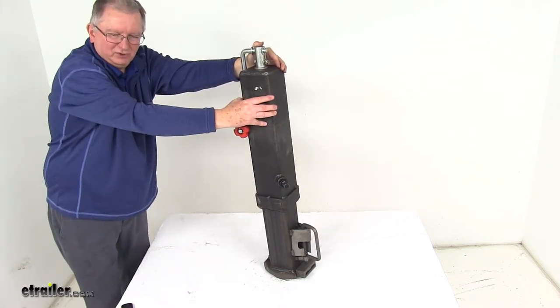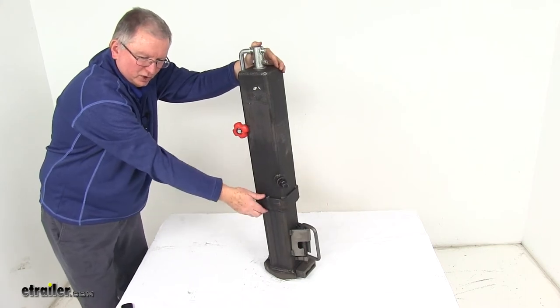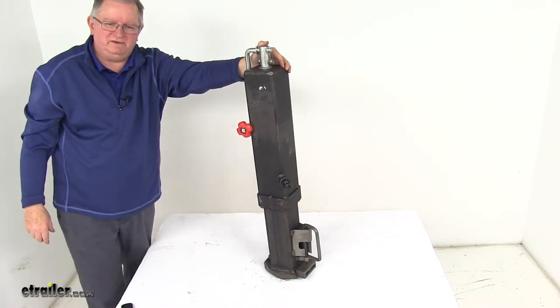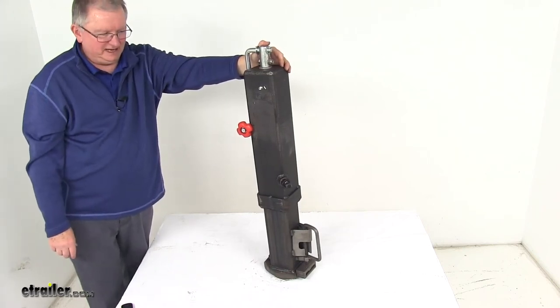The outer tube diameter is 4.5 inches. The inner tube diameter is 4 inches. The tube wall thickness is 0.275 of an inch, and the weight capacity is 30,000 pounds.